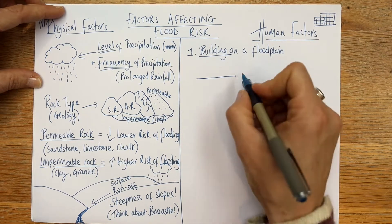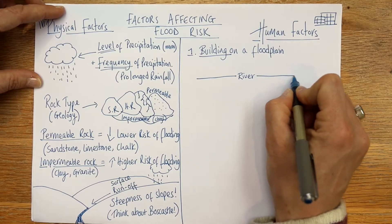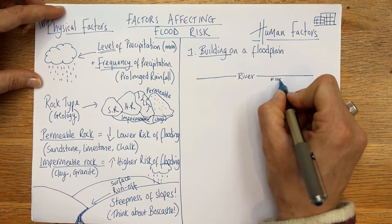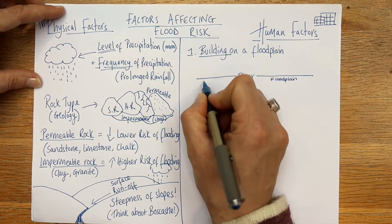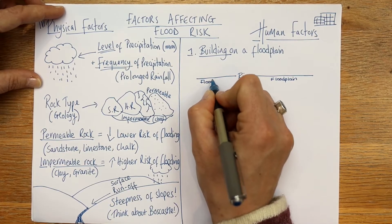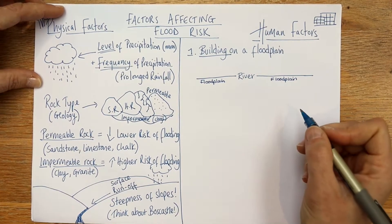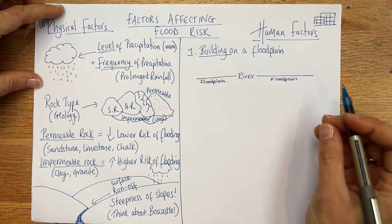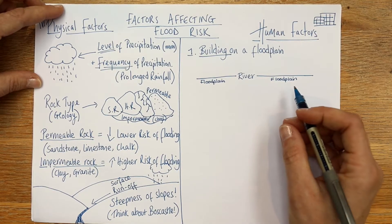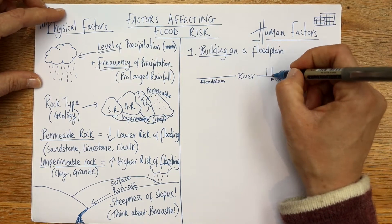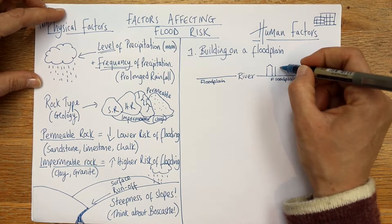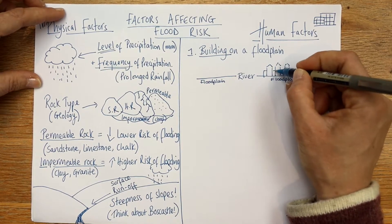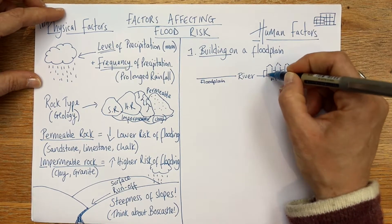Draw a river with lines either side — that's our floodplain. A floodplain is the wide, flat expanse of land on either side of the river in the lower course. The fact it's flat makes it really attractive to developers, because it's difficult building on hills. Property developers come along and build houses on the floodplain.